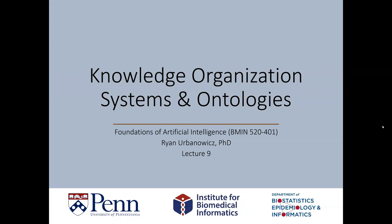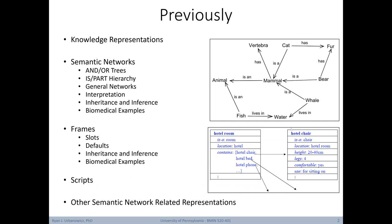Hello and welcome to Lecture 9 of Foundations of Artificial Intelligence. Today we're going to continue on the topic of knowledge representations. In particular, we're going to learn about different knowledge organization systems and then we'll focus in particular on ontologies. In our last lecture, we talked about knowledge representations in general and then turned our focus to semantic networks, frames, scripts, and some other semantic network related representations.